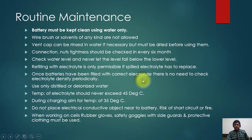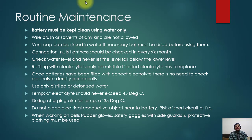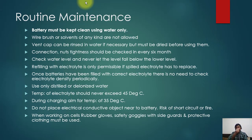For routine maintenance, batteries must be kept clean using water only. You should not use acid or any other solution, wire brush, or solvent of any kind — a wire brush can cause a short circuit. Vent caps can be rinsed in water if necessary but must be dried before using. If caps are clogged, gases cannot escape from the battery, pressure will build up inside, and it may chip or damage the battery cell.